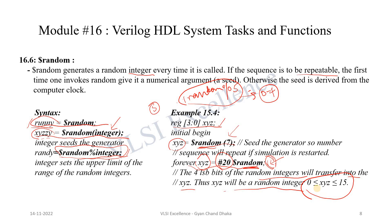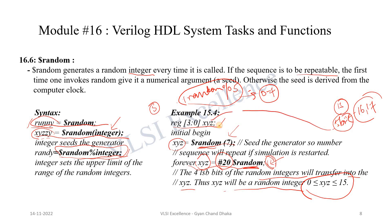So xyz will be a random integer between 0 and 15 only. If the random value generated is more than 15 — for example 16, 17, 18, or 19, which in binary would be a 5-bit number — our variable is just 4 bits, so the most significant bit will be omitted. Therefore the range of xyz is going to be between 0 and 15.